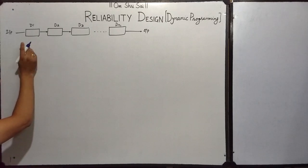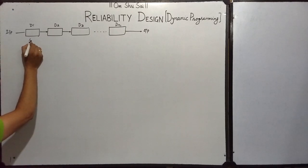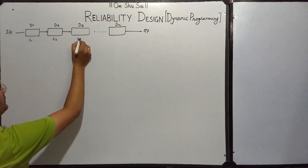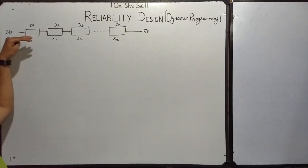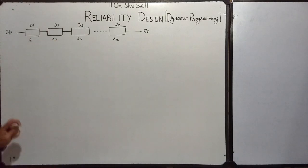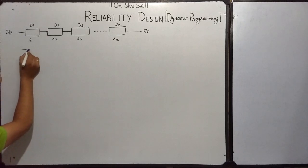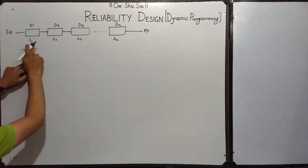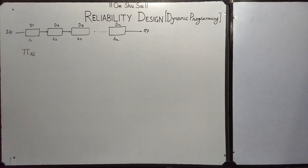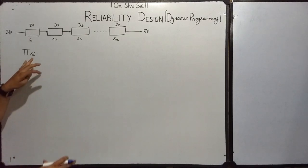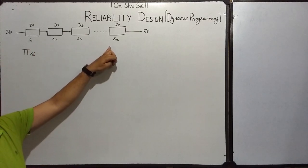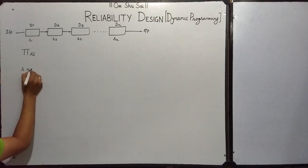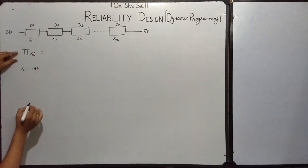Let's say the probability that each device will work properly is R1, then R2 for the second device, R3, and so on. If these devices are connected in series, the overall probability of the system will be the product of all RI from i=1 to n. For example, if the reliability for each device is common, say R = 0.99, then what will be the overall reliability of the system?